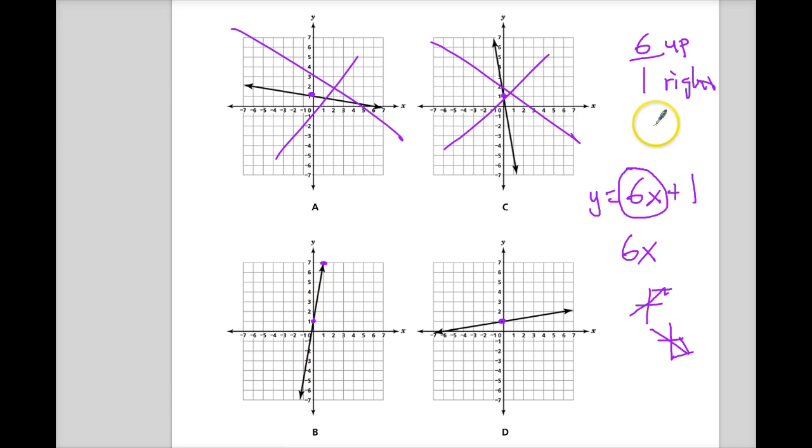If you want to go the other direction, you want to go left, you just change this to 6 down, 1 left. Now you have to change both. You can't go 6 down and 1 right because then that would change the sign on the number.